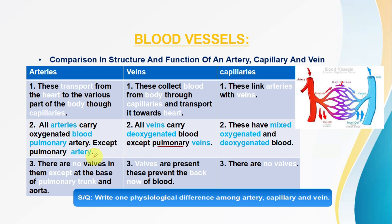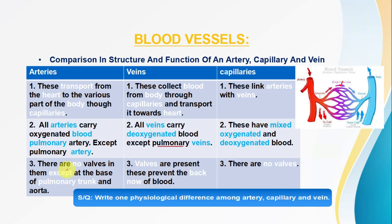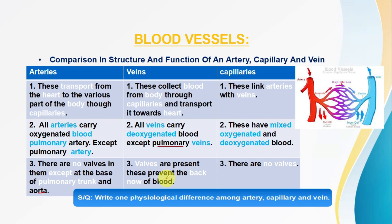Next, we discussed the walls. Arteries generally have no valves, but there are special cases: at the base of the pulmonary trunk and the aorta, there are semilunar valves. So the base of the arteries does have semilunar valves. This is the characteristic feature of arterial walls and valves.